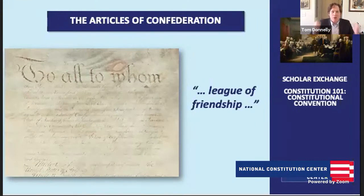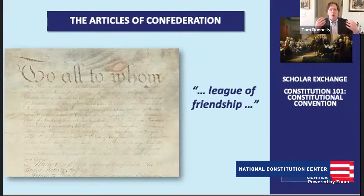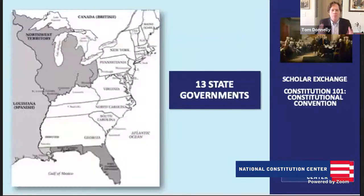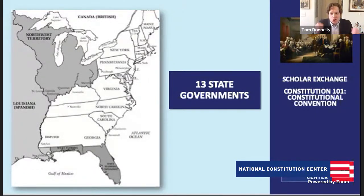You might think, this is a new experiment in government — why can't we make it better over time, amend it, change the document? But the Articles of Confederation required unanimity for any amendments — all 13 states had to agree. It will surprise no one that we agreed on no amendments prior to the Constitutional Convention. Many people thought there were problems, believed the government was too weak, but the structure of the framework itself made it impossible to change.